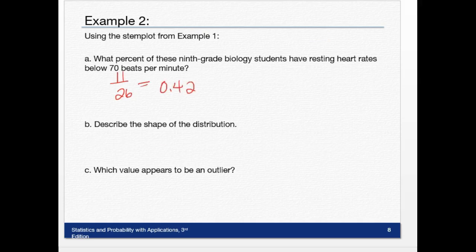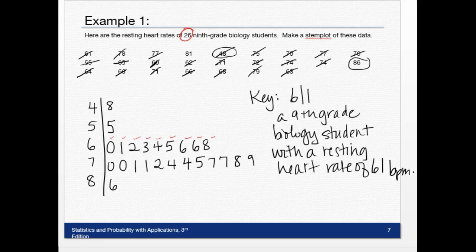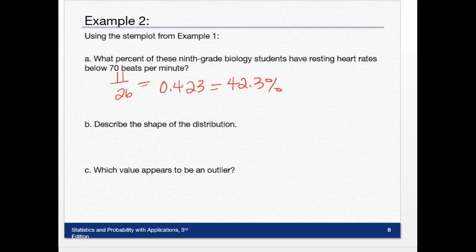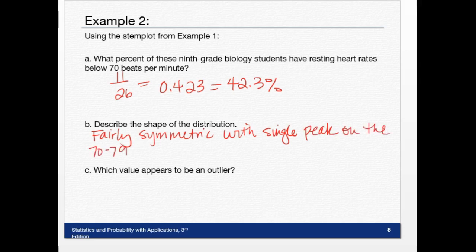Question B says describe the shape of the distribution. If I do broad strokes and think what is the shape of this, this is symmetrical. There is a gap right here between 48 and 55—it's not huge, but there is a gap. And there's a peak in the 70s somewhere in here. So the shape of this distribution, we would say it is fairly symmetric with a single peak on the 70 to 79 range and has a small gap between 48 and 55 beats per minute.